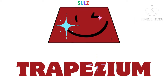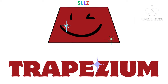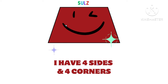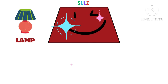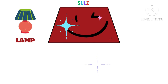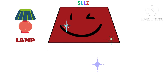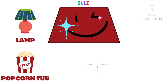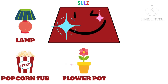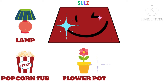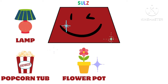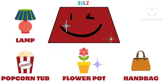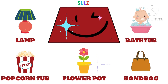Hi, I am trapezium. I have four sides and four corners. You can see my shape in a lap, popcorn tub, flower pot, handball, and bathtub.